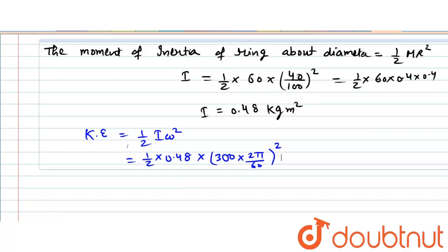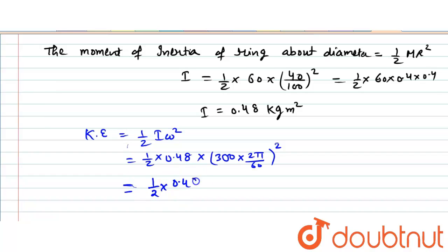So, we can calculate kinetic energy from this term. It will become 1 by 2 into 0.48 into 9 into 10 raised to power 4 into 4 pi square divided by 60 into 60. After solving this whole term, we will get the kinetic energy of 6 pi square Joule.